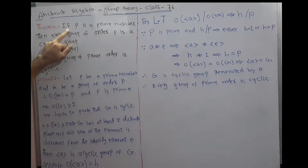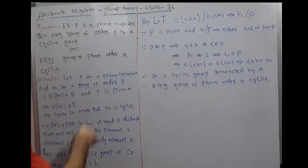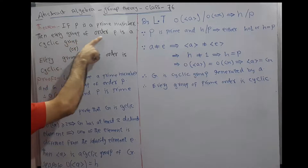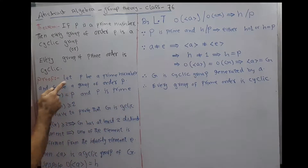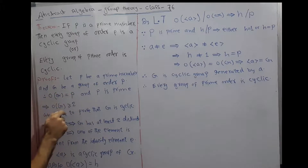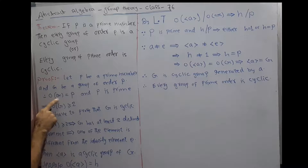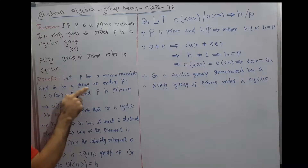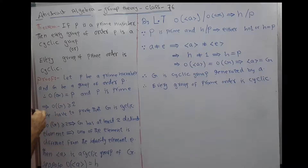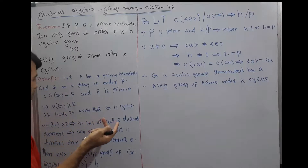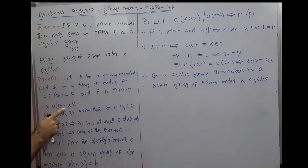Theorem: if p is a prime number, then every group of order p is a cyclic group. Or equivalently, every group of prime order is a cyclic group. Proof: let p be a prime number and G be a group of order p. Therefore the order of G equals p. Since p is prime, p is greater than or equal to 2 (e.g., 2, 3, 5, 7, 11...), so the order of G is at least 2.